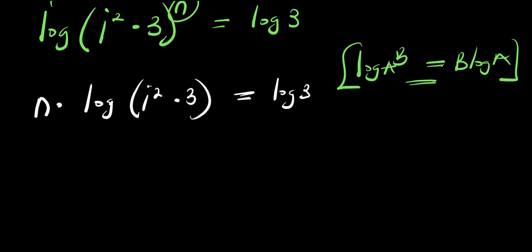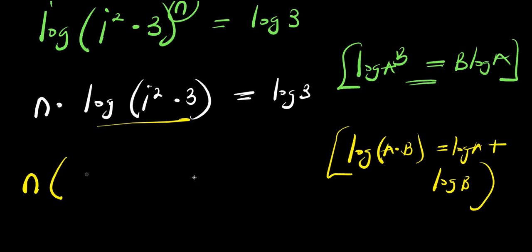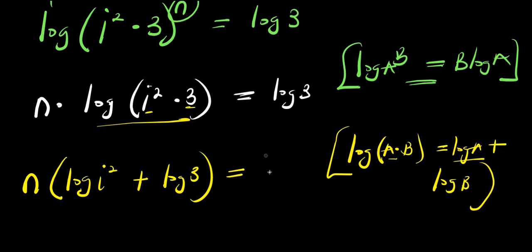Now the next thing is for us to apply another logarithm property. This expression is in the form of log of a times b. If you have log of a times b, this equals log a plus log b. So we apply this property right here, and we are going to have n times — we have log i squared, this is like a, and we have plus, this is like b — we have log 3. And this equals log 3.